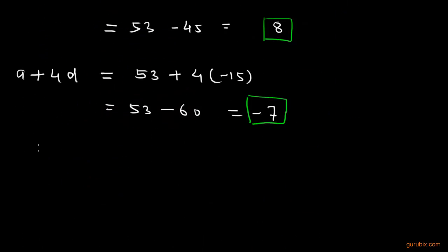Therefore, our AP is 53, 38, 23, positive 8, negative 7, and finally minus 22. This is the solution. Thank you.